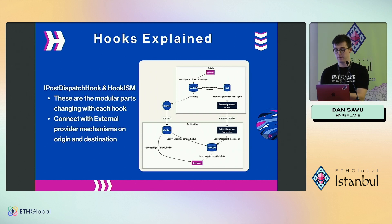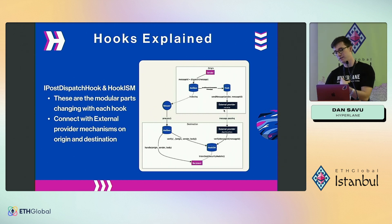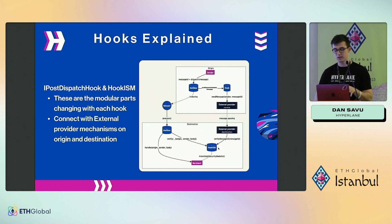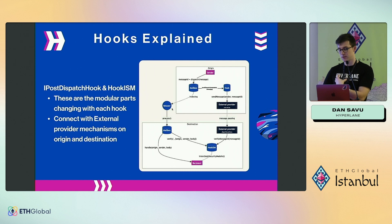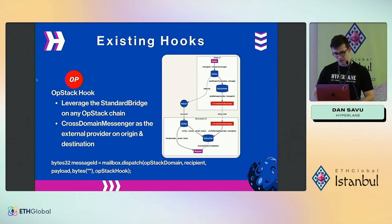The mailbox sees the hook address and calls it with the message via the IPostDispatchHook interface. The hook calls into the external bridge provider smart contract; that provider's infrastructure passes your message to the destination chain, ultimately reaching the hook ISM. The final step is for the relayer to call the mailbox with the ID of that message. The mailbox calls the hook ISM to verify whether that message ID was received, and if so, forwards it to the recipient.